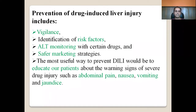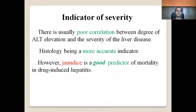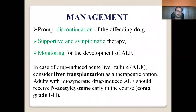The most useful way to prevent DILI is to educate patients about warning signs such as abdominal pain, nausea, and vomiting. Clinically, there is a correlation between the degree of ALT elevation and the severity of liver disease. Histology is a more accurate indicator, though biopsy is not always feasible. Jaundice is a good predictor of mortality in drug-induced hepatitis. In management, prompt discontinuation of the offending drug is generally required, followed by supportive and symptomatic therapies and monitoring for development of acute liver failure.